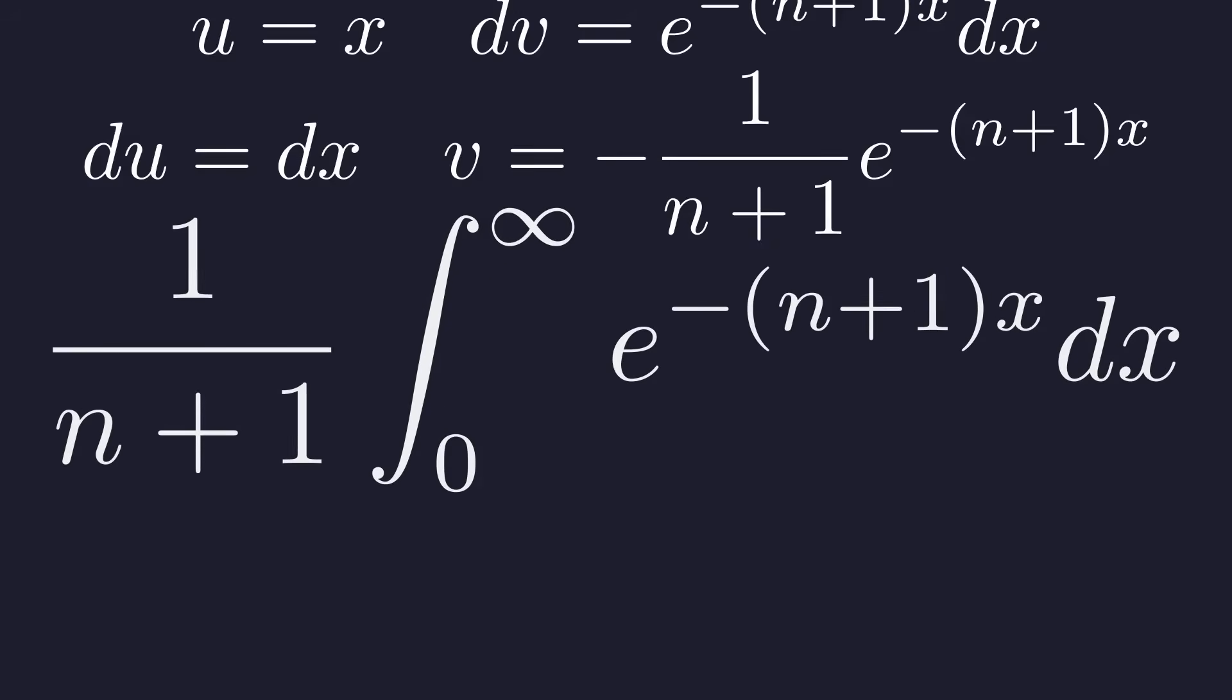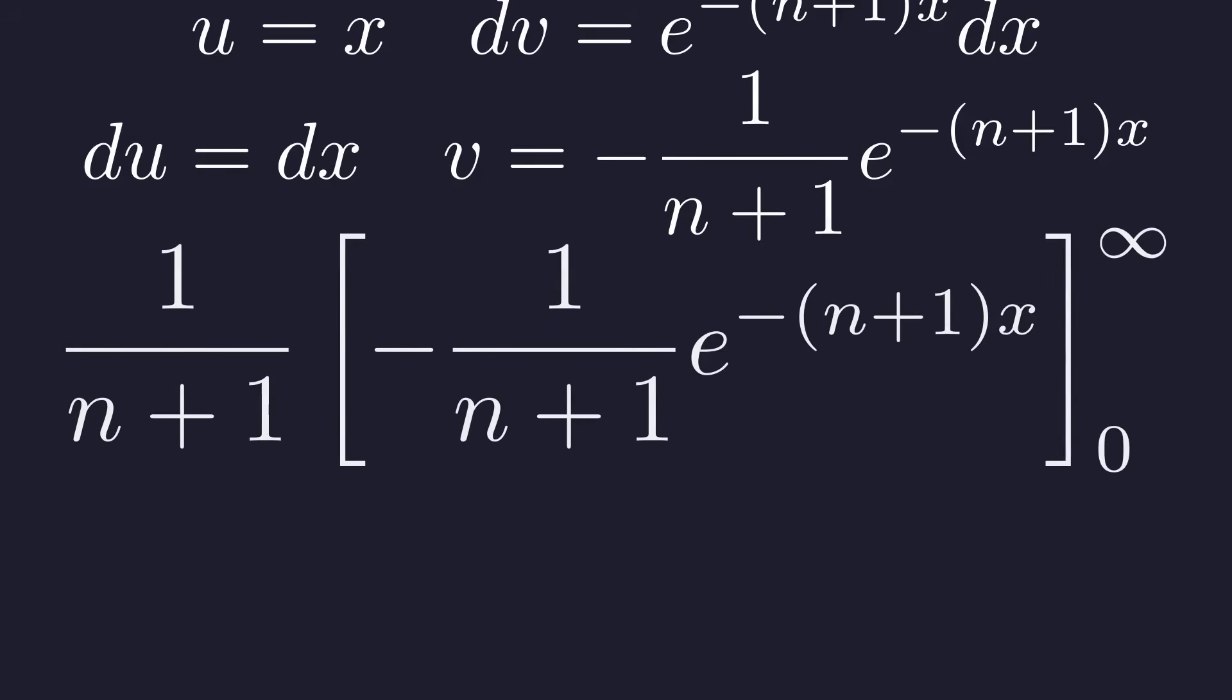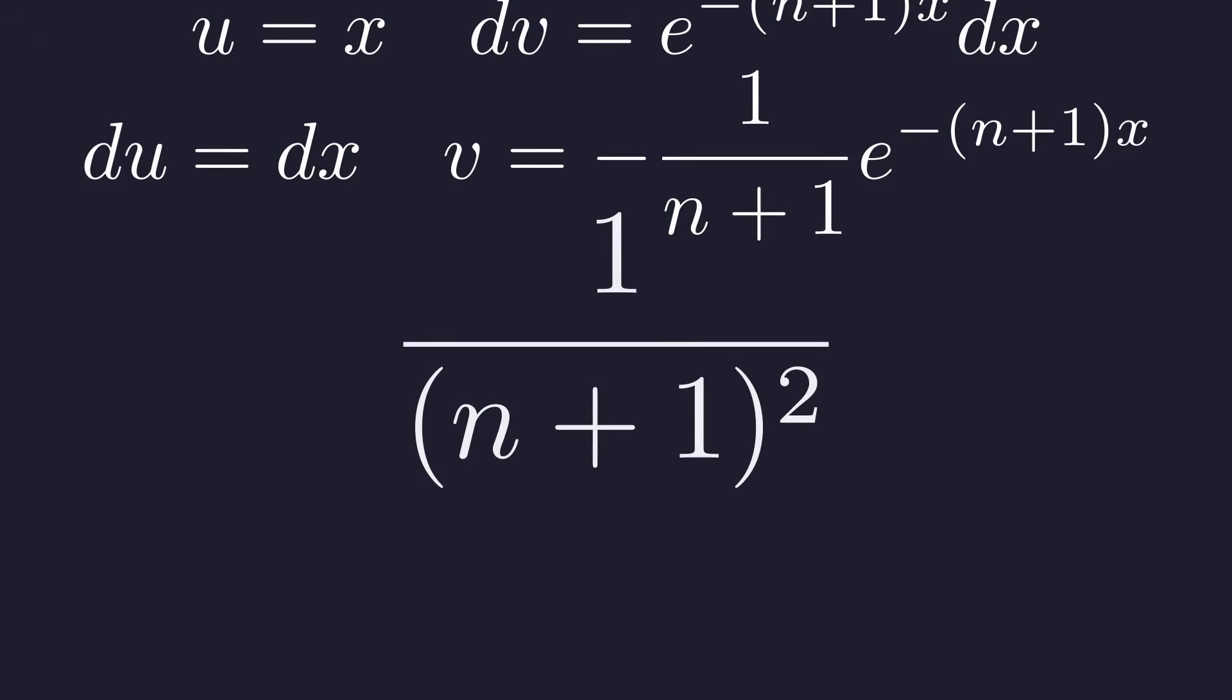The constant 1 over n plus 1 can come out front. Integrating the exponential is straightforward. At infinity, the exponential goes to 0. At 0, e to the 0 is 1. So we get 0 minus negative 1 over n plus 1. That gives us 1 over n plus 1 times 1 over n plus 1, which is 1 over n plus 1 squared.